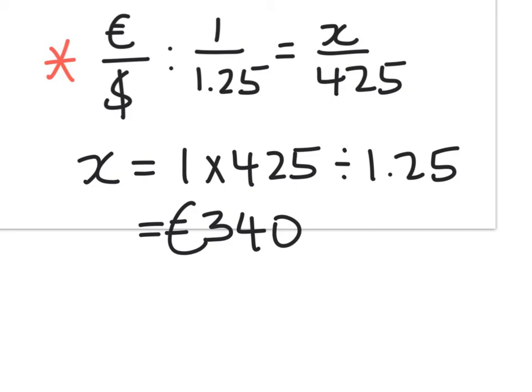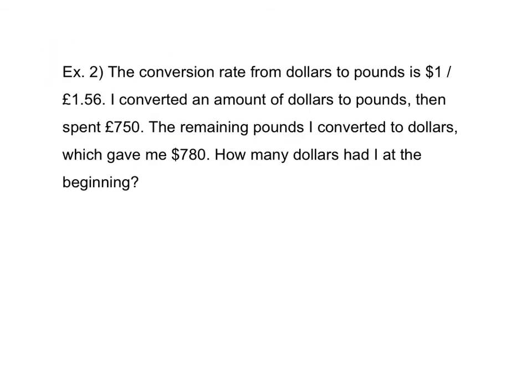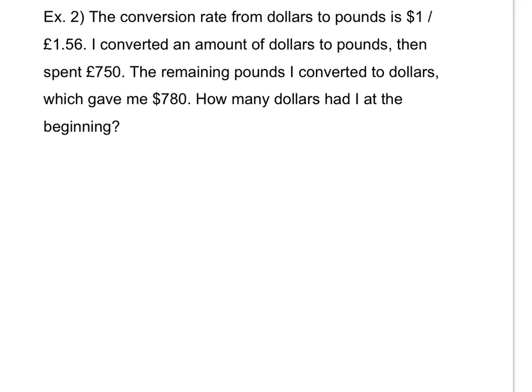I don't mind using calculators with these questions because it just helps the calculations become a bit easier. So, here we have the conversion rate from dollars to pounds is $1 gets me $1.56. That actually probably should be the other way around. So, one pound gets me $1.56. So, I converted an amount of dollars to pounds and then spent £750. The remaining pounds I converted to dollars, which gave me $780. How many dollars had I at the beginning?